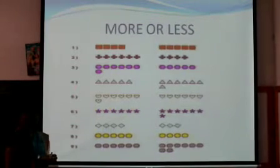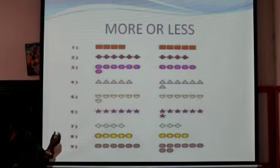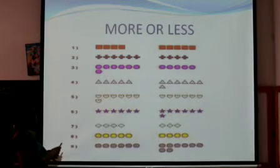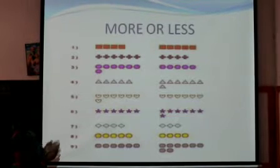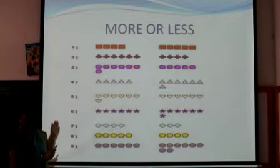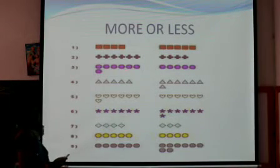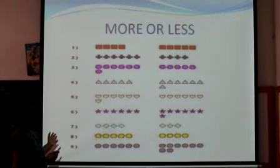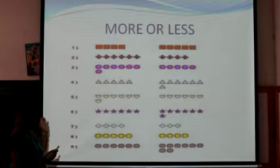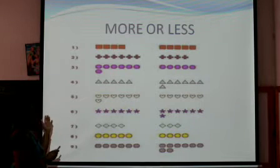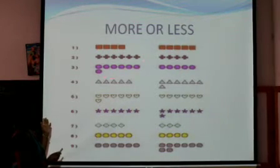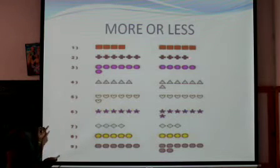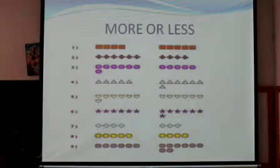Now let's see the third one. How many circles do we have — they look like balls. We have one, two, three, four, five, six, seven — seven. And on that side we have one, two, three, four, five — only five. So seven is more, circle the one which has seven and put a tick mark on the one which is five.